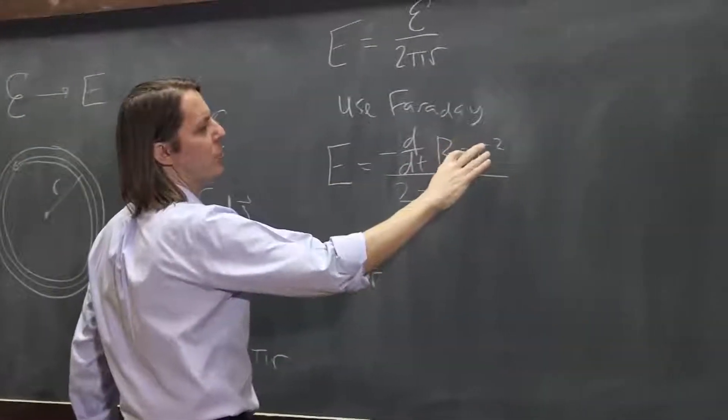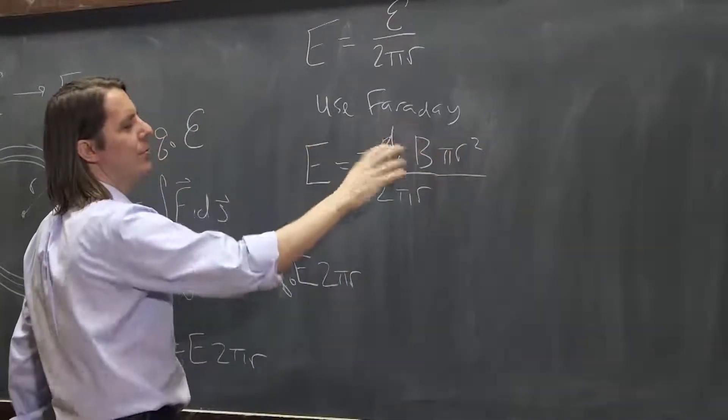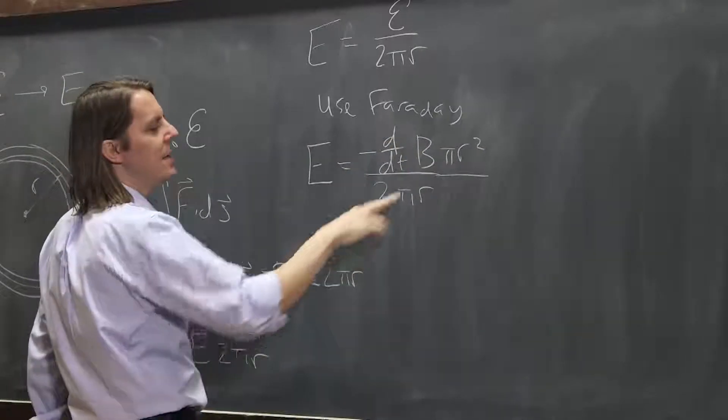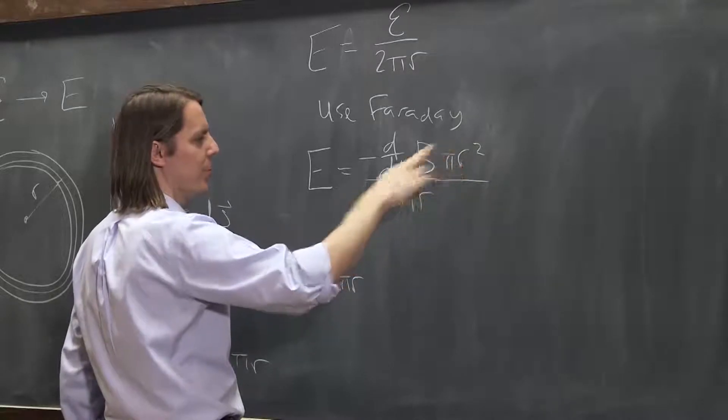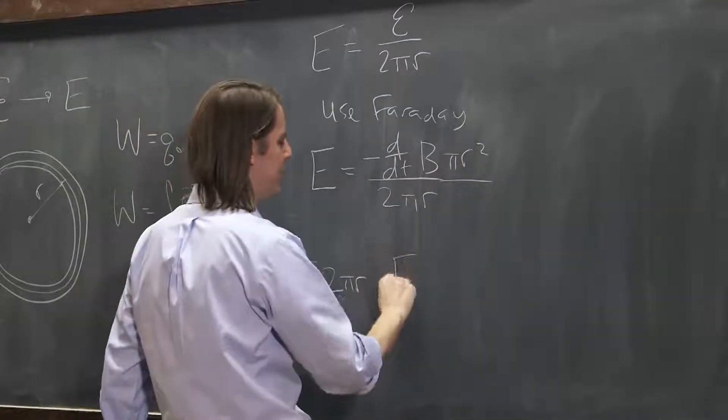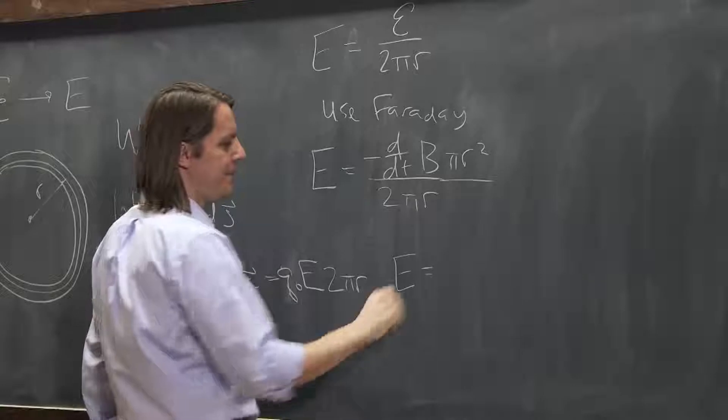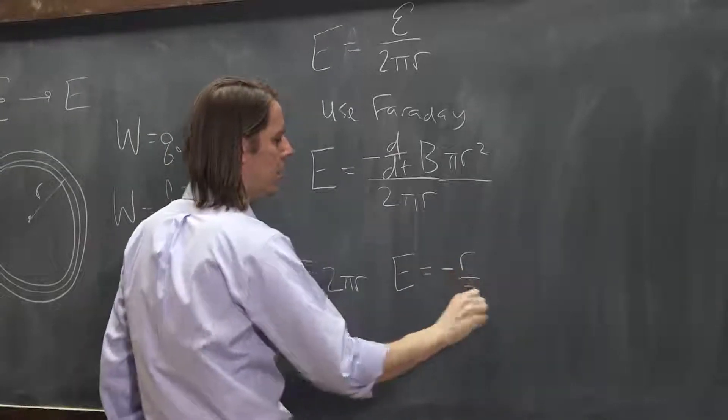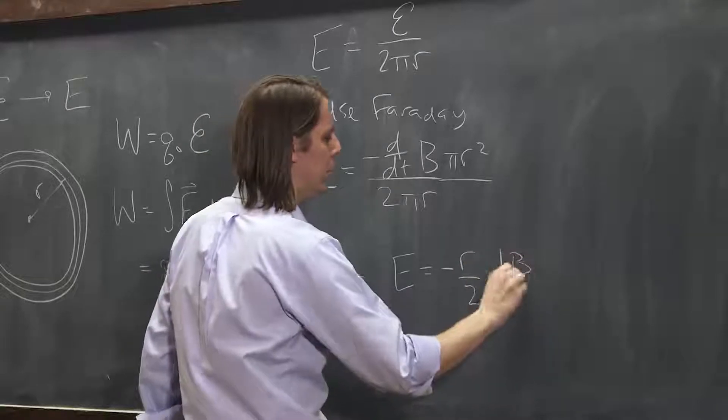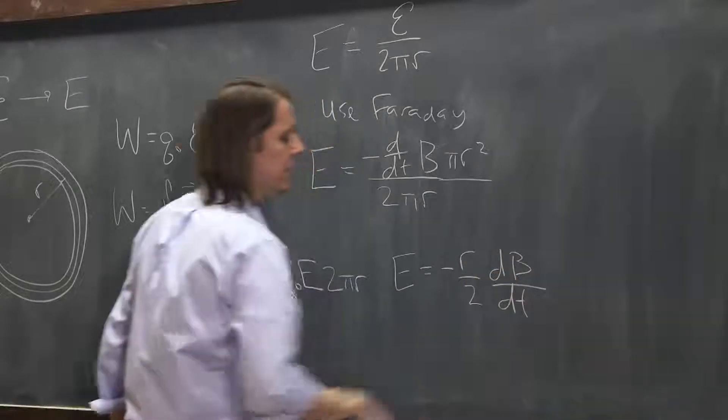So the πr² is constant, it can come out of that derivative. It's really just dB/dt. And then you can cancel that r² over that r, it becomes just r, the π's go away. What you end up with is the magnitude of the E field equals minus r over 2 times dB/dt.